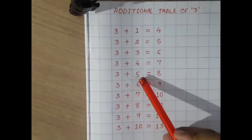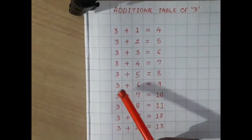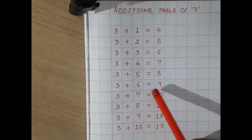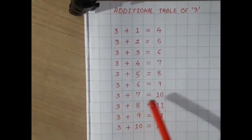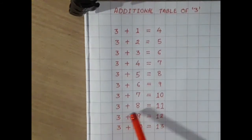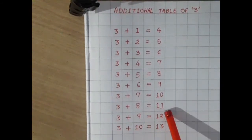3 plus 5 equals 8, 3 plus 6 equals 9, 3 plus 7 equals 10, 3 plus 8 equals 11.